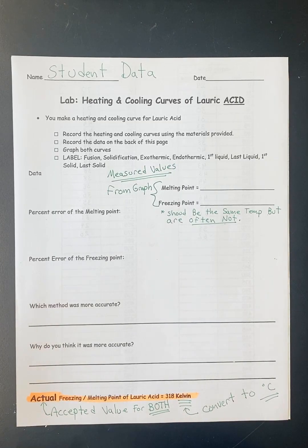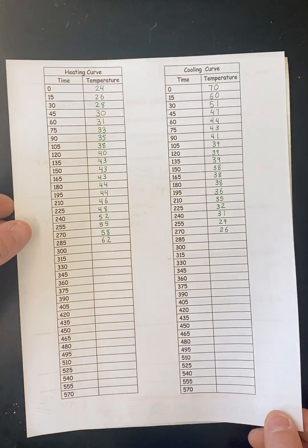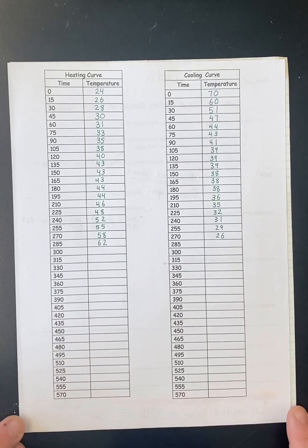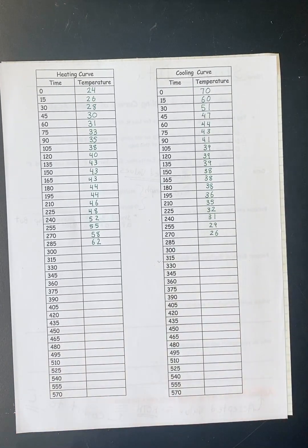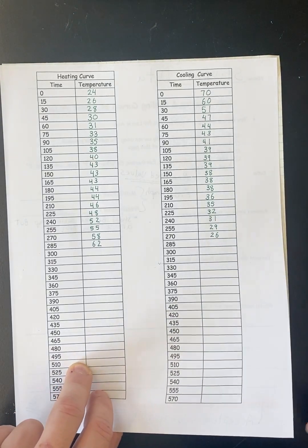So what we're going to be doing is we're going to be looking at student data from a previous year that had a good heating and cooling curve. This is something you would normally do on your own but if you're virtual you're not going to be able to do that. So on the back is the data, it's all written down for you and I am going to include pictures of this information in the notebook page so you don't have to worry about writing this all down or pausing it.